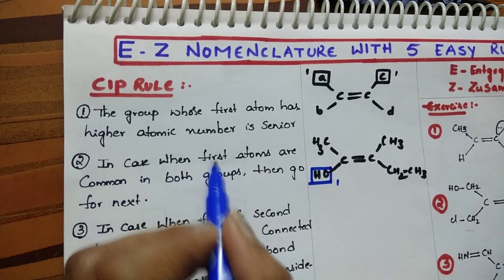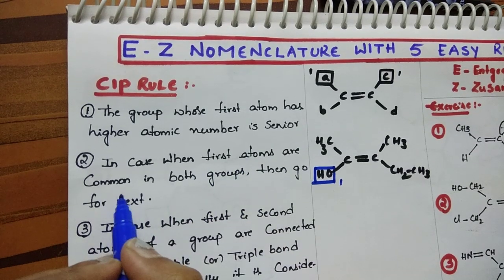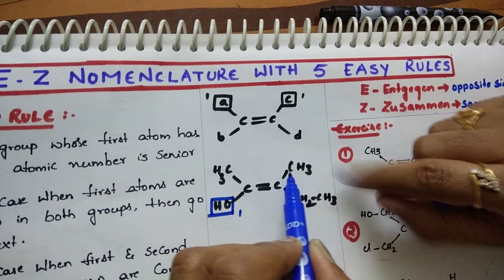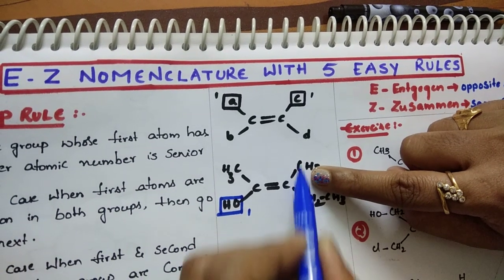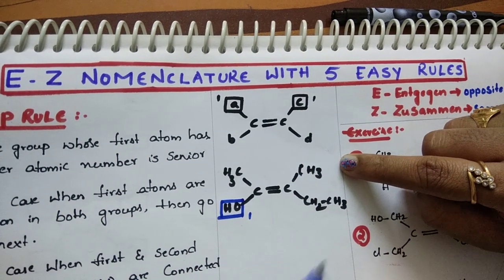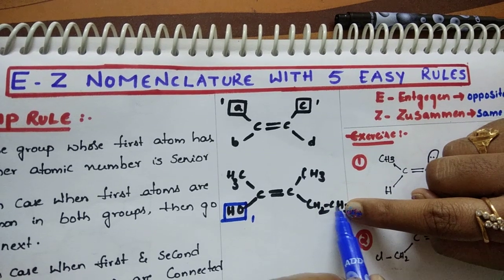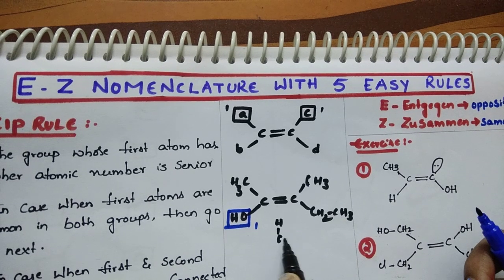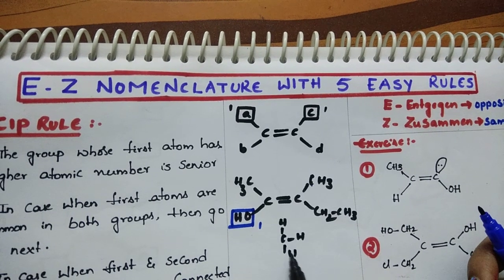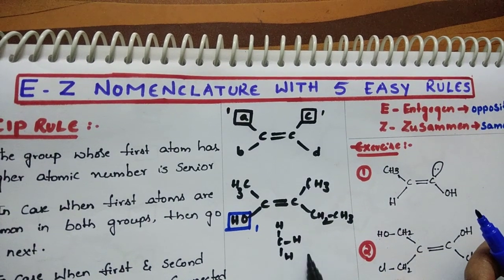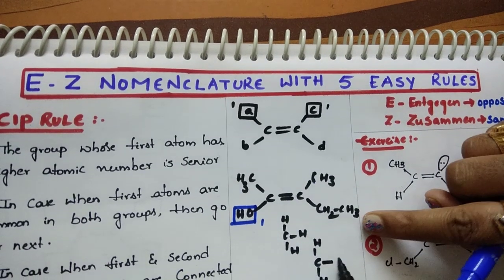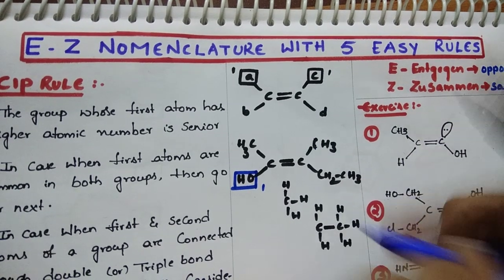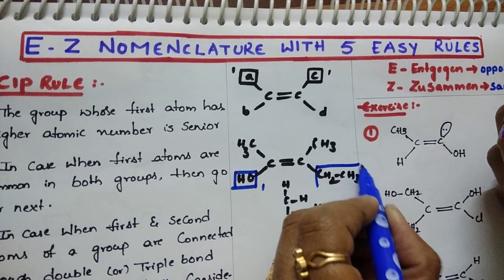Rule number 2: In case when first atoms are common, then you should see the next group. Suppose in this case, both groups have carbons linked. Then you have to see the next atoms. To this carbon, 3 hydrogens are linked. In this case, the other group has a carbon with 2 hydrogens and one more carbon with 3 hydrogens. So this group has more priority — this is the senior group.